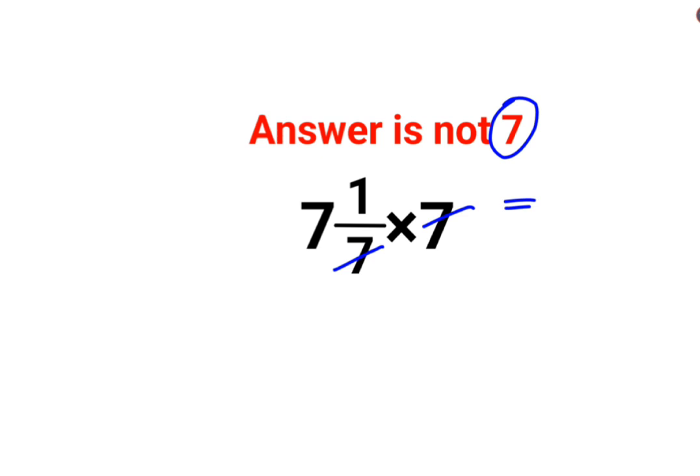So how do you do this? When you convert to improper form, the denominator continues to be the same. The change happens only in the numerator where you multiply the integer part with the denominator. So we have 7 multiplied by 7, and you add the numerator.